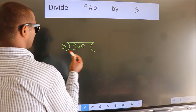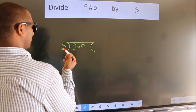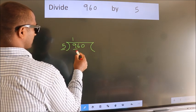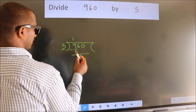Here we have 9. Here 5. A number close to 9 in the 5 table is 5 once is 5. Now we should subtract. We get 4.